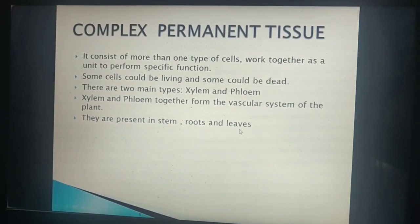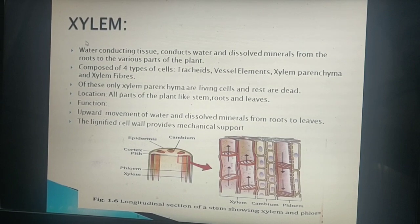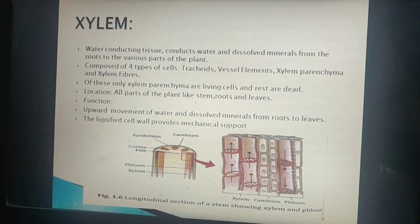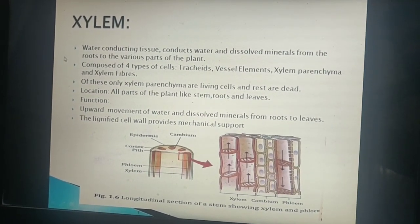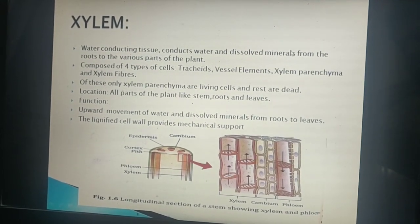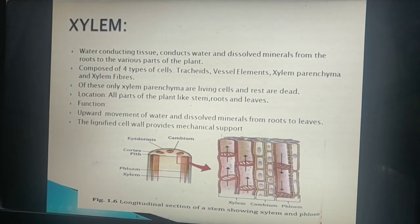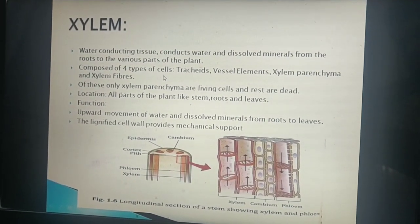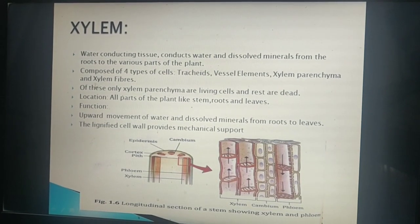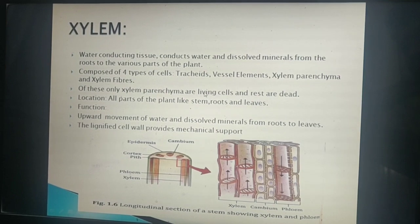Now let us study about the vascular tissue, that is xylem. This is the xylem LS, or longitudinal section, of xylem. The xylem is called a water-conducting tissue. It conducts water and dissolved minerals from the roots to various parts of the plant. This xylem tissue is composed of four types of cells: tracheids, vessel elements, xylem parenchyma, and xylem fibers.